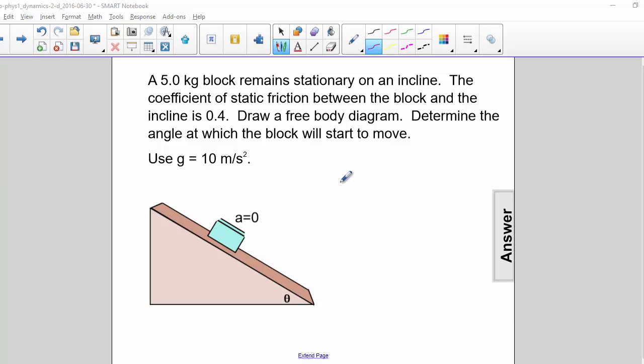A 5 kg block remains stationary on an incline. The coefficient of static friction between the block and the incline is 0.4. Draw a free body diagram. Determine the angle at which the block will start to move.